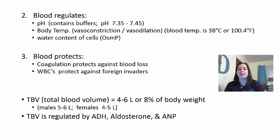Total blood volume is regulated by several hormones. ADH, anti-diuretic hormone, helps regulate water content added back to the blood, and aldosterone—released by the adrenal glands—tells the kidneys to hold on to salt and therefore water; both increase total blood volume. On the other hand, ANP (atrial natriuretic peptide), released by the atria of the heart, decreases total blood volume and blood pressure.